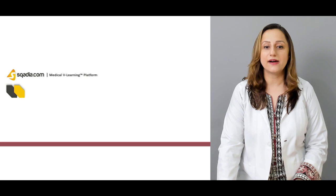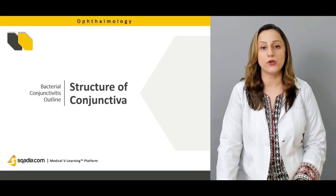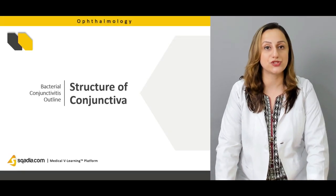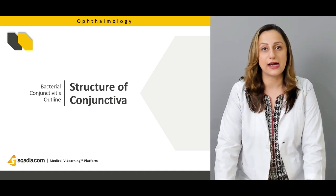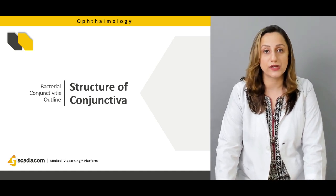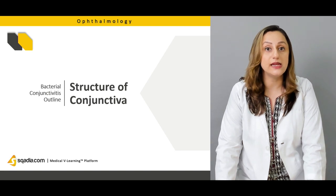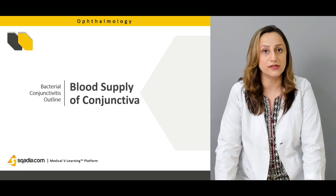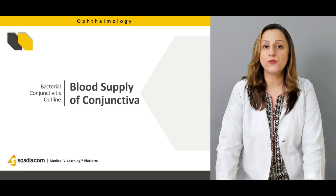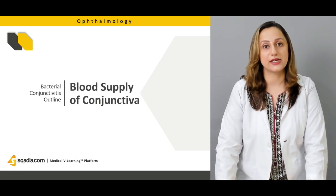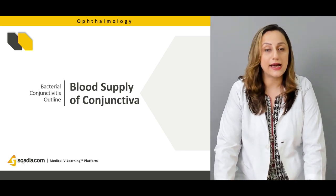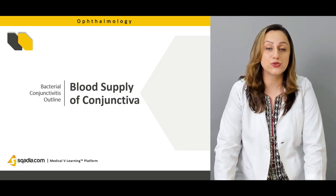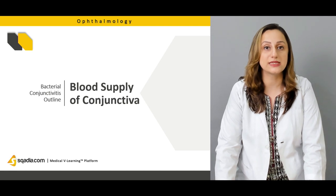In this lecture we'll first outline the structure of the conjunctiva. Knowing the applied anatomy of the conjunctiva is very significant because we'll be terming the different types of conjunctivitis. Then we'll move on to the blood supply of the conjunctiva — how this structure is supplied by the arteries and venules.